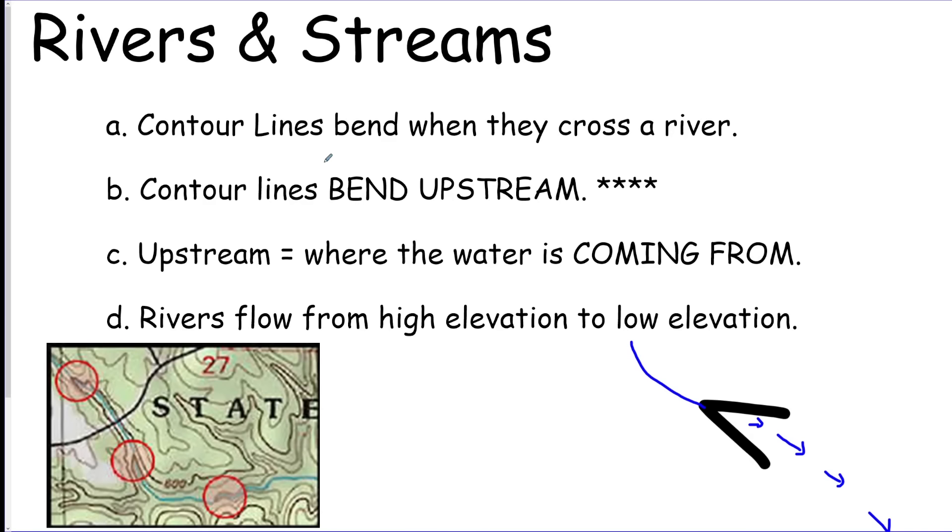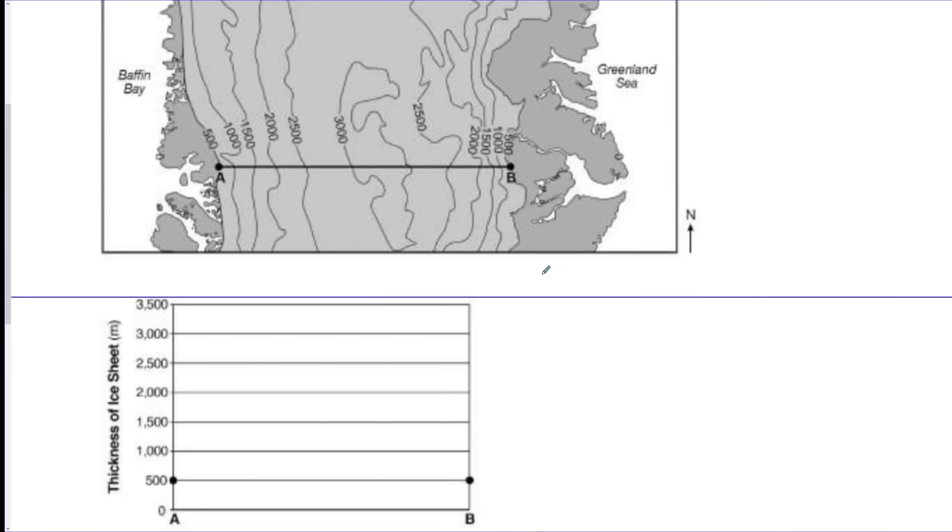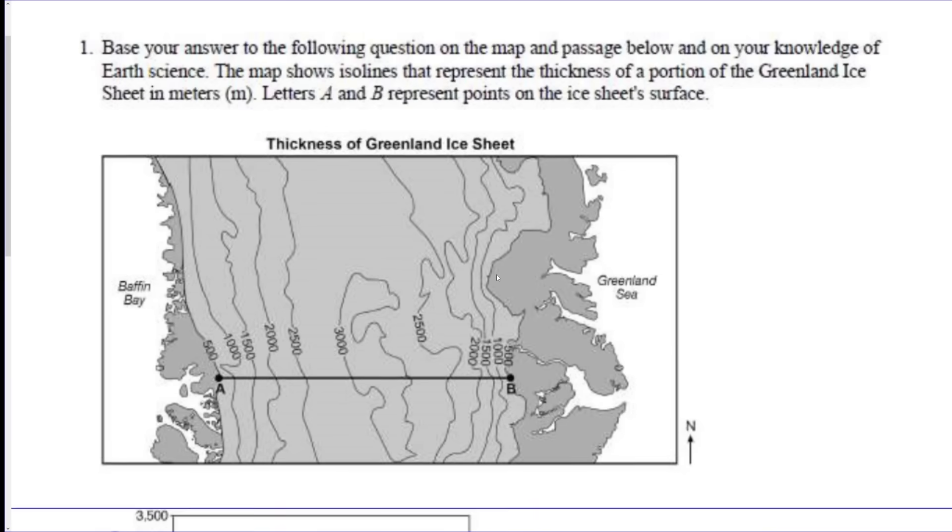Rivers: contour lines bend upstream. This is the sentence to remember for that. So you should be able to look at a contour map and know what direction the river is flowing. They also flow into lakes and oceans, generally from mountains. They flow downhill, high elevation to low elevation. Just a quick example here, this Earth river, you can see the contour lines bending here, right? So this would be flowing this way, so south.